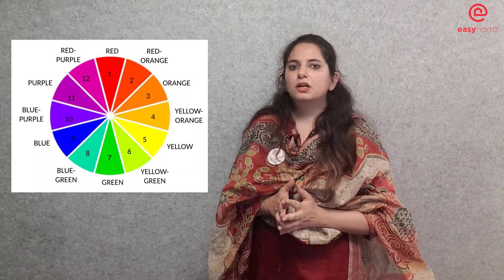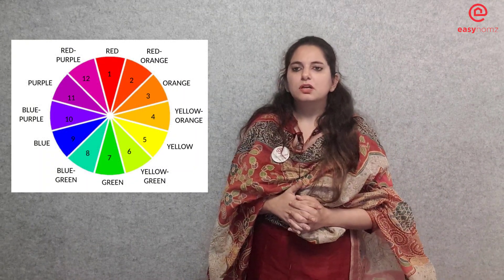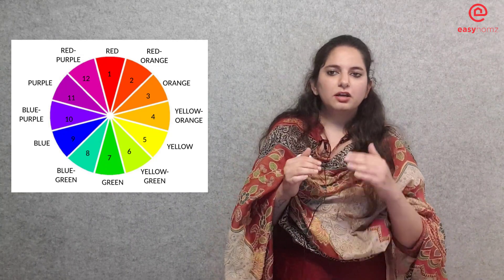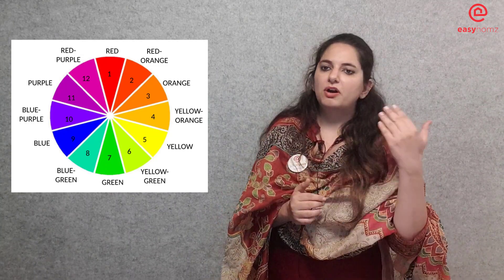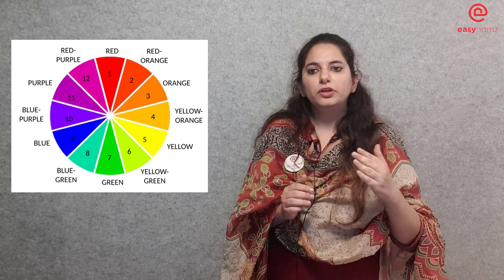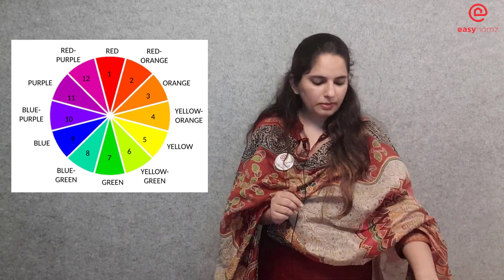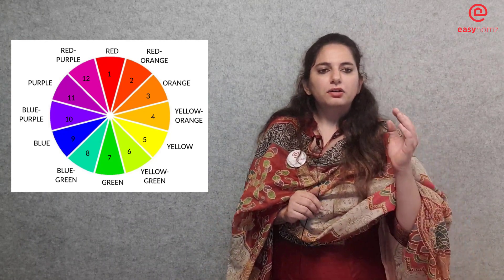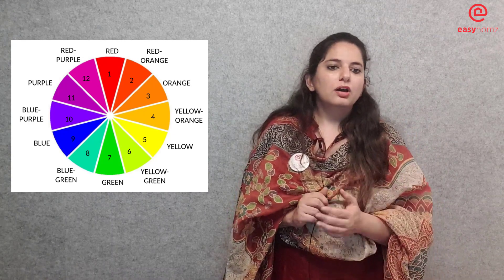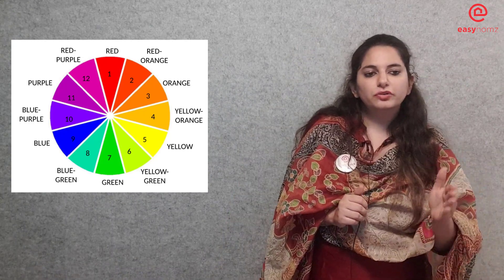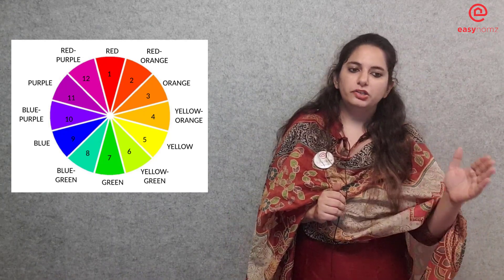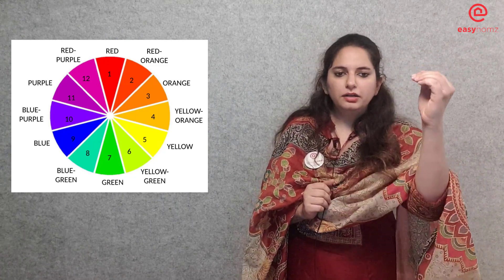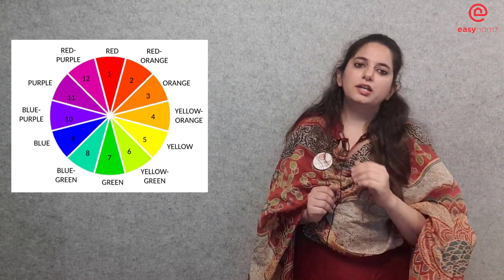The split complementary color scheme. Split complementary colors are three colors combined by one hue plus the hues on each side of its complement. For example, red and green are complementary colors. The colors next to green are yellow-green and blue-green. So the split complementary colors are red, blue-green, and yellow-green.